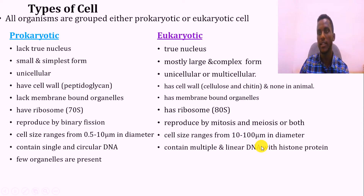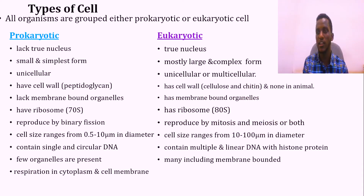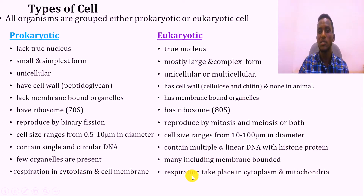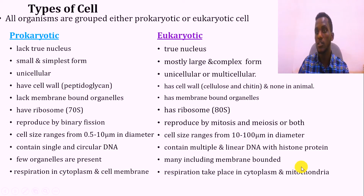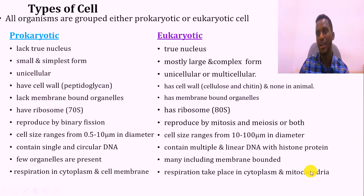Regarding organelles, there are few organelles present in prokaryotic cells. But in case of eukaryotic, there are many, including membrane-bounded organelles. For respiration: anaerobic respiration takes place in the cytoplasm for both, and aerobic respiration takes place in the cell membrane for prokaryotic - using the mesosome instead of mitochondria. In case of eukaryotic, aerobic respiration takes place in the mitochondria.